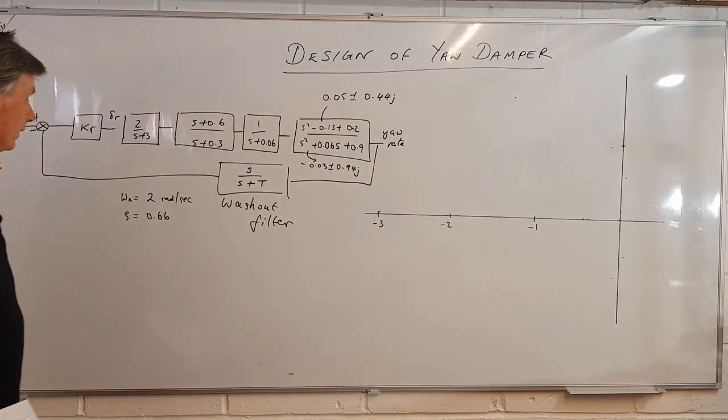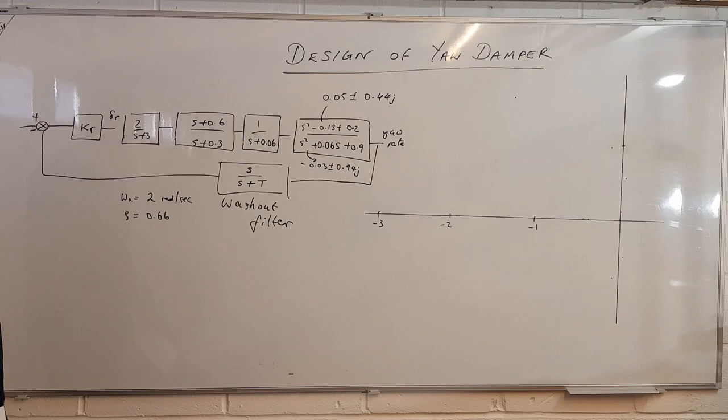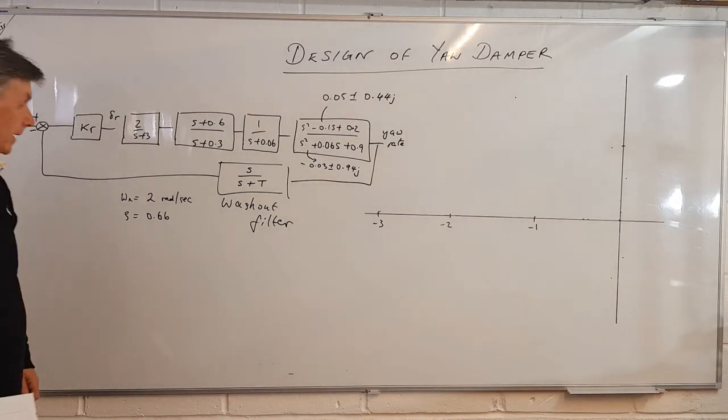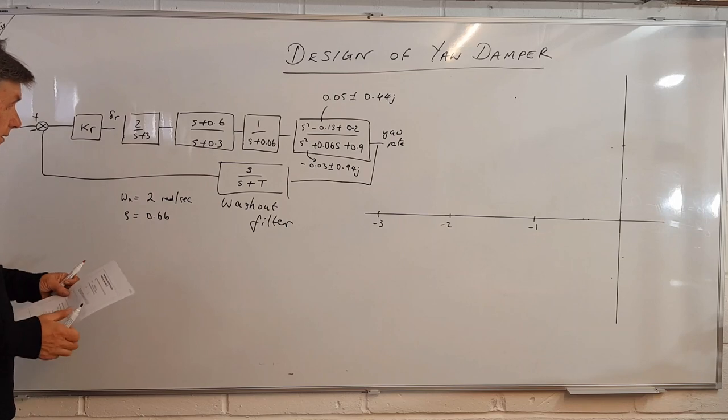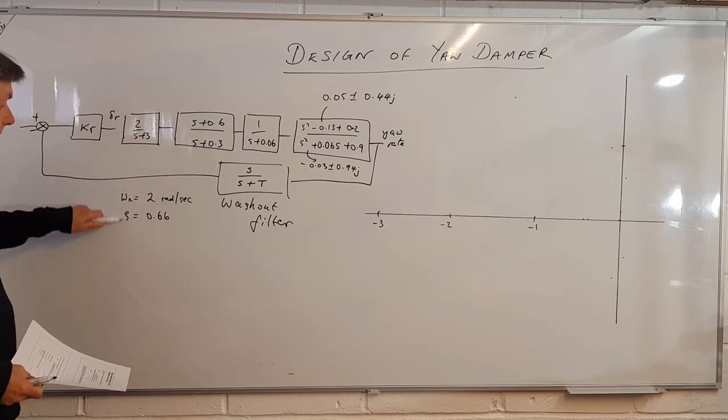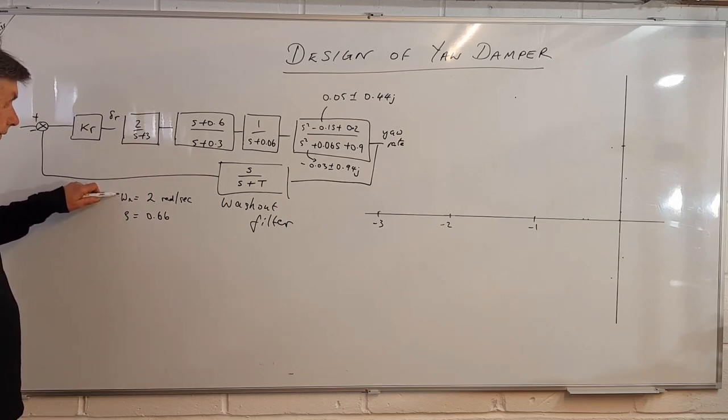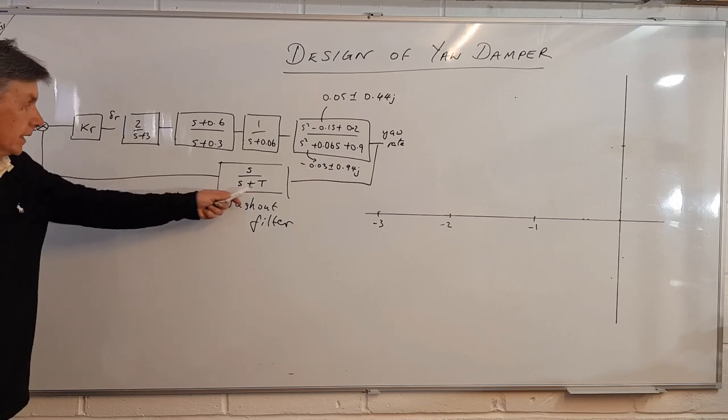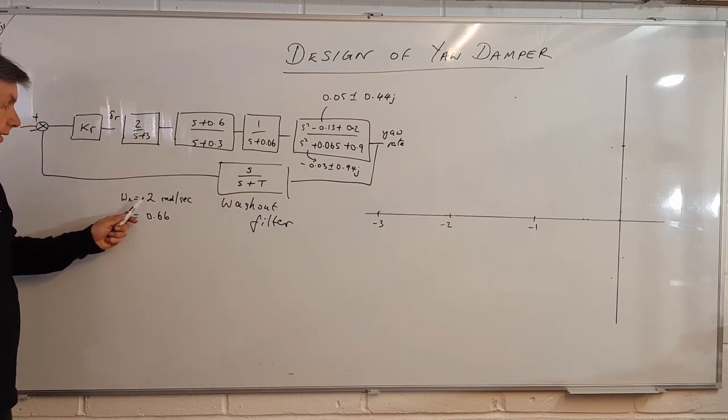Minus b plus or minus the square root of b squared minus 4ac over 2a. There's also a design requirement with this, which is designed t and kr so we can achieve a certain natural frequency damping ratio.